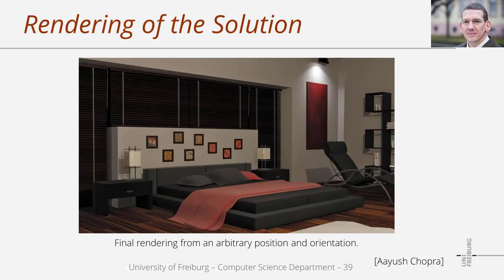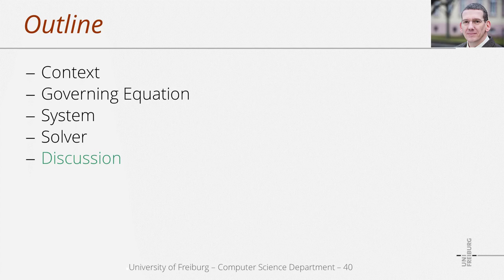When the light transport is computed for a modeled scene, we can render images. Note that the approach only handles Lambertian surfaces. On the other hand, it is rather efficient to render different views of the same scene once the light transport has been computed. That is it about the introduction to the radiosity concept. In the following I would like to discuss a few aspects in more detail.